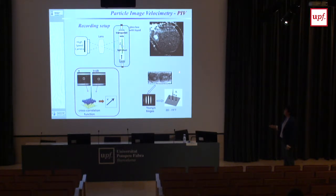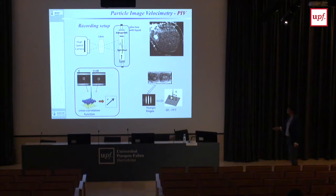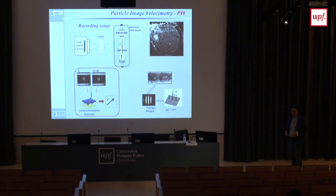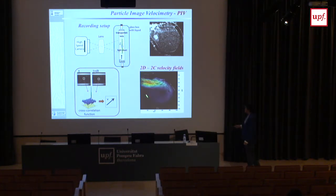When all particle positions are in the same recording — because the camera is not fast enough but the laser is — you get an autocorrelation function with three peaks. The problem is that when the displacement is small, the side peaks mix with the central one, causing errors. You also cannot tell which of the two side peaks gives the direction of displacement.